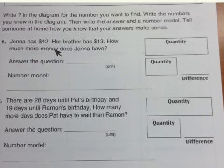Jenna has $42. Her brother has $13. How much more money does Jenna have? Answer the question and write the number model. So remember the larger quantity would go in the larger quantity box. So what's the larger quantity here? It is 42. And the smaller quantity would be 13.